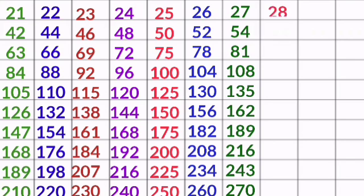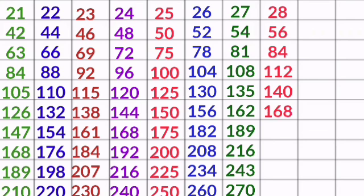28 1s are 28, 28 2s are 56, 28 3s are 84, 28 4s are 112, 28 5s are 140, 28 6s are 168, 28 7s are 196, 28 8s are 224, 28 9s are 252, 28 10s are 280.